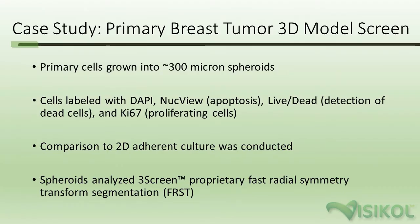In this case, our case study is primary breast tumor 3D model screening. We're looking at primary cells from Solaria, the Wood cell line, which are primary breast cancer cells, grown into 300 micron spheroids.